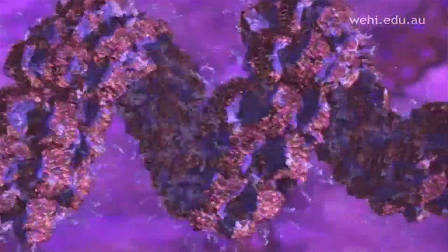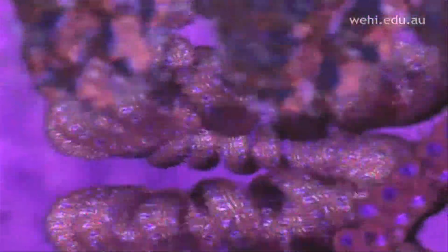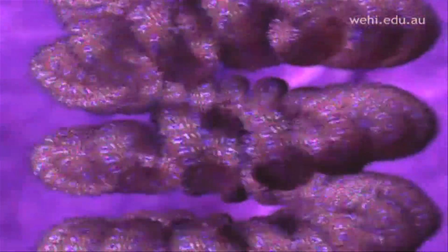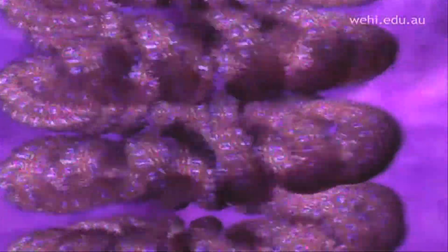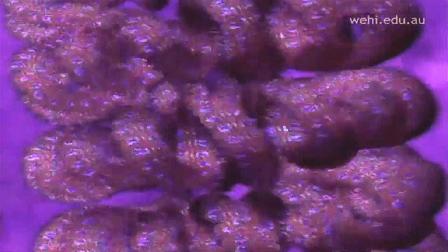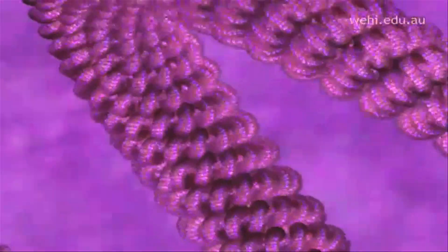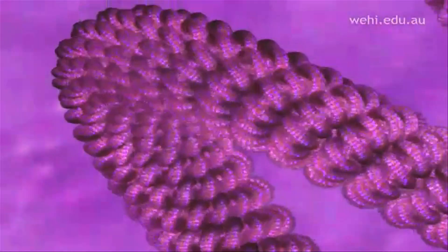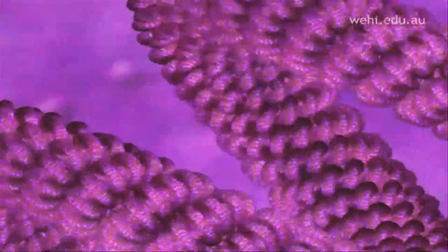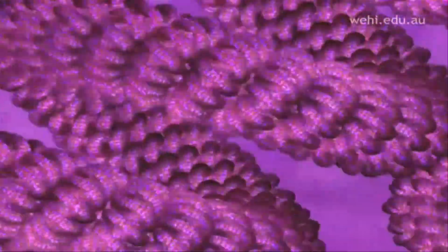This fiber is then looped and coiled yet again, leading finally to the familiar shapes known as chromosomes, which can be seen in the nucleus of dividing cells.